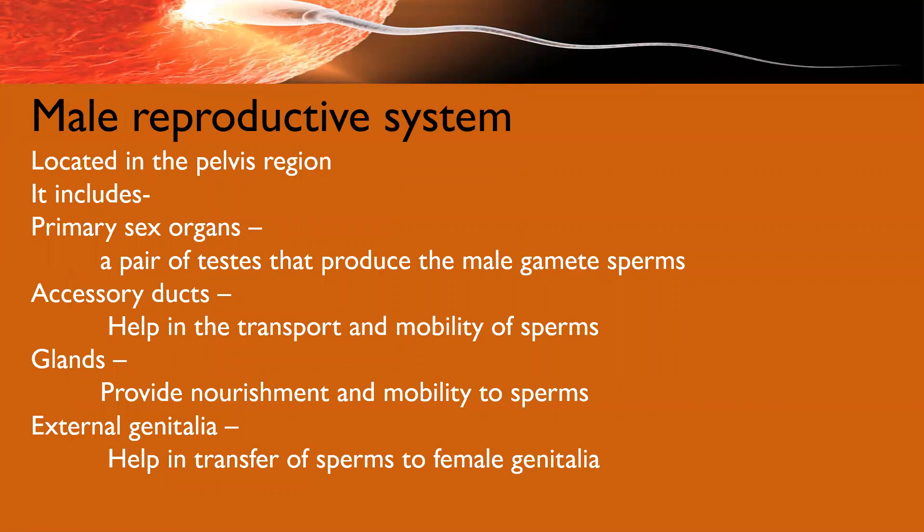Now let us start with the male reproductive system. The male reproductive system is situated in the pelvis region — that is the lower abdominal cavity, around the pelvic girdle. The main organs included in the male reproductive system can be divided into different categories. The first are primary sex organs — those organs directly involved in gamete formation — and these are the pair of testes.